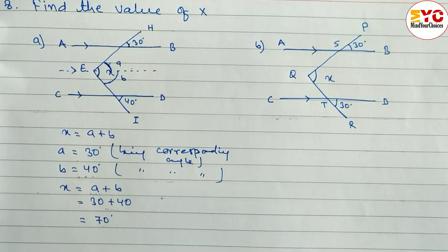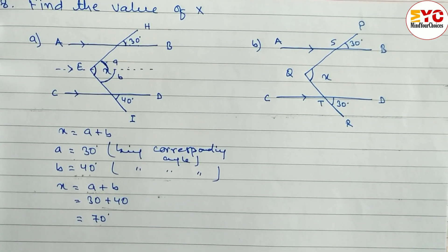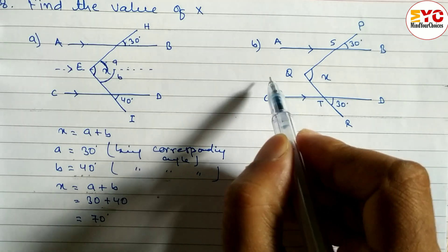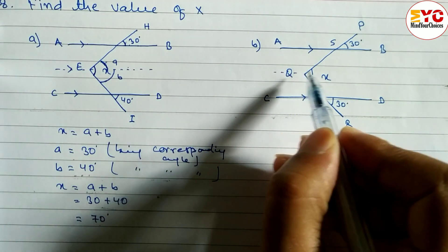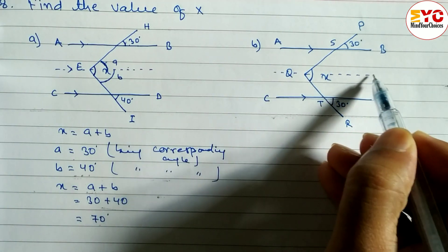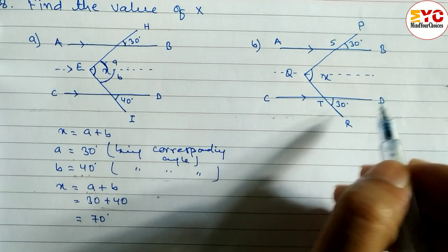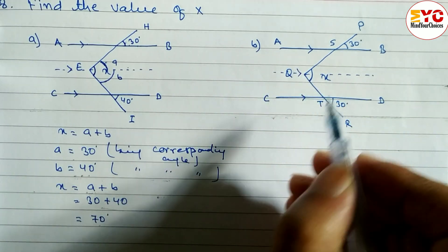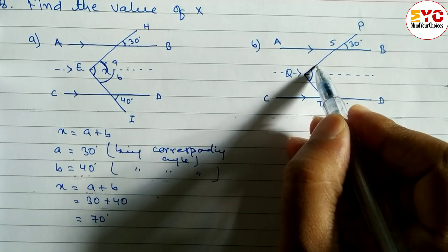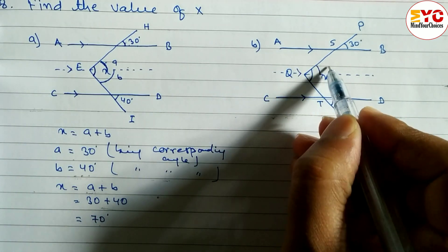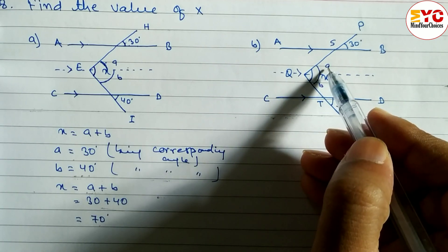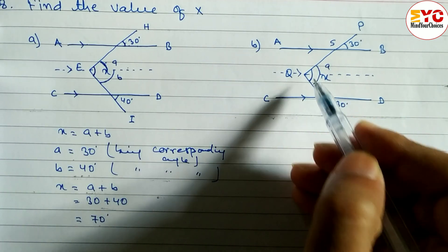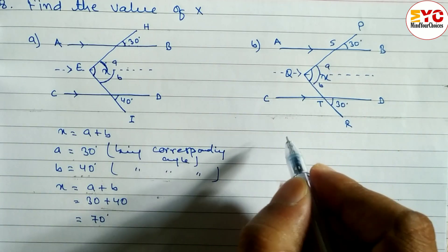Hope you understand question number a. Now look at question number b. Here also the same method applies. When you draw one parallel line parallel to AB and CD, these two lines are parallel. Let upper part be A and downside be B. So first of all we have to find out the value of A and B, then x is equal to A plus B.